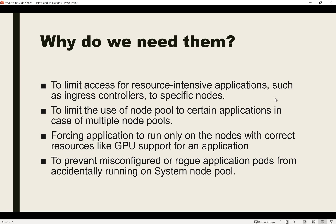The second example is if there are two different projects running on the same cluster, and project A has separate billing with different applications they want to run on a specific node pool, while project B wants to run their application on another node pool. Taints are applied on the nodes based on projects to manage scheduling. The third reason is if a particular application requires GPU support, you don't want to waste resources by running a pod that doesn't need GPU on that node.